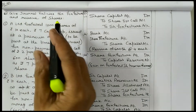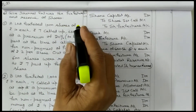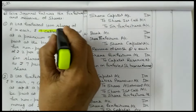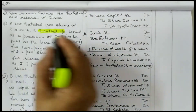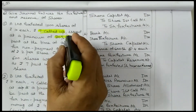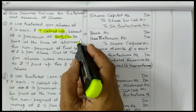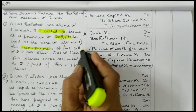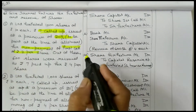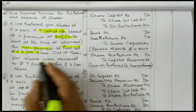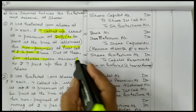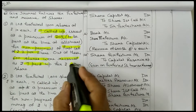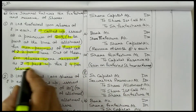A Limited forfeited 1000 shares of ₹10 each, ₹7 called up, issued at a premium of 20% to be paid at the time of allotment, and for non-payment of first call of ₹2 per share. Out of these, 600 shares were reissued at ₹7 paid up and ₹4 per share.